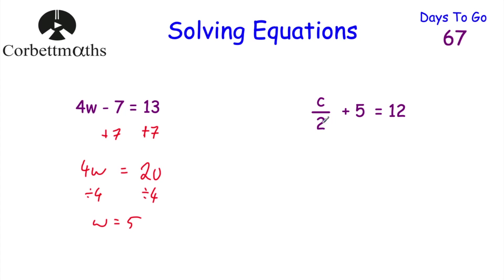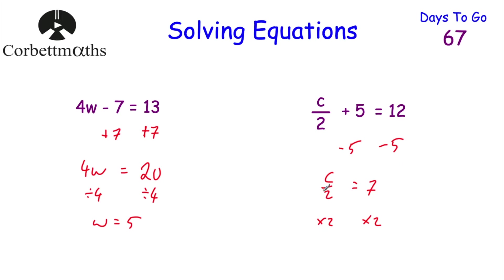Next question: C over 2 plus 5 equals 12. We want to find C. First get rid of the plus 5 by subtracting 5 from both sides. On the left-hand side we're left with C over 2, and on the right-hand side 12 minus 5 equals 7. So C over 2 equals 7. Now multiply both sides by 2 to get rid of the divide by 2, leaving us with C. And 7 multiplied by 2 is 14. So C equals 14. Check: 14 divided by 2 is 7, plus 5 is 12. Perfect.